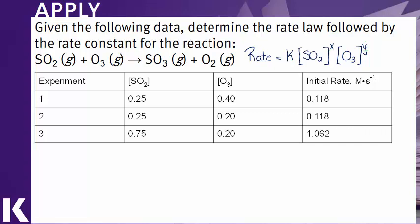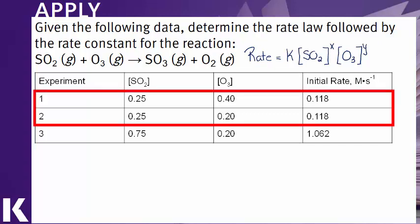The first thing we have to do is find two trials where we vary the concentration of one reactant but not the other. And we might look at experiments one and two. Here we are holding the concentration of sulfur dioxide constant, so essentially this is times one. And we are varying the concentration of ozone.